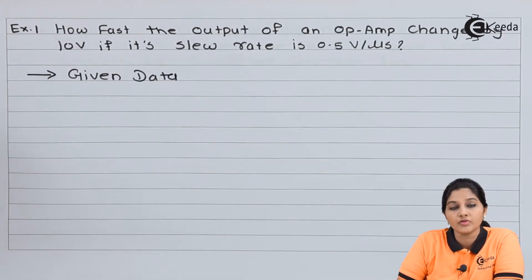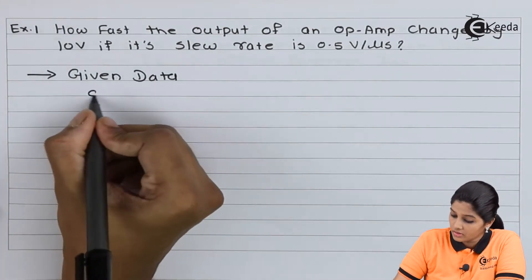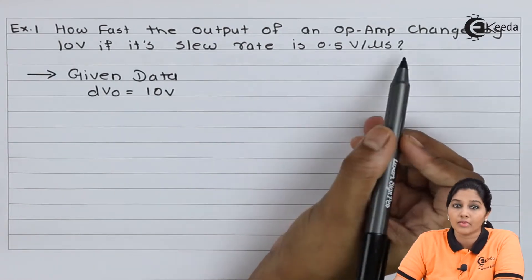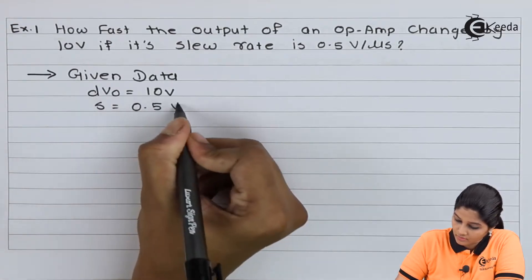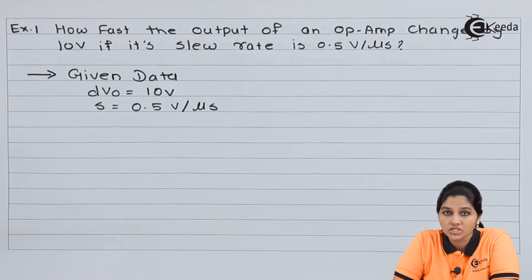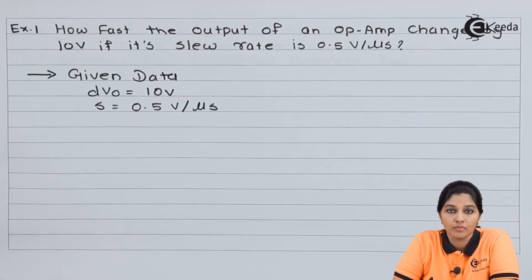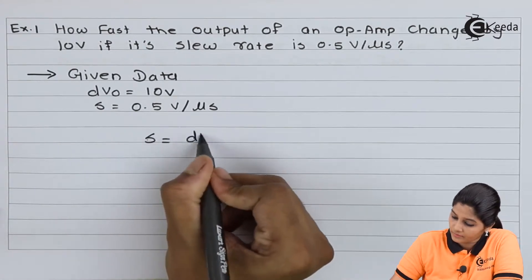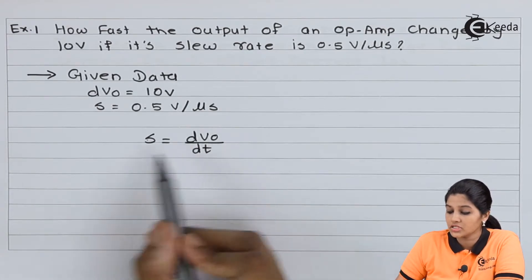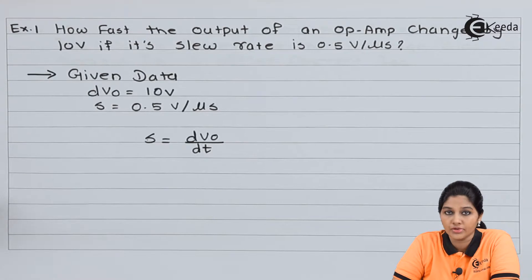Here the rate of change of output voltage dV0 is equals to 10 volt, and slew rate is given as 0.5 volt per microsecond. Slew rate gives the rate of change of output voltage — that means how fast the output of op-amp gets changed whenever there is a change in the input. It gives the speed of operation of op-amp. Slew rate is given by S equals dV0 upon dt. Here the value of dV0 and slew rate is given and we need to calculate the value of time period.